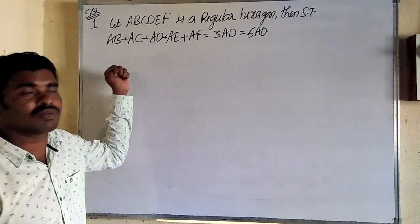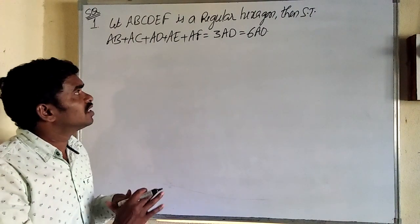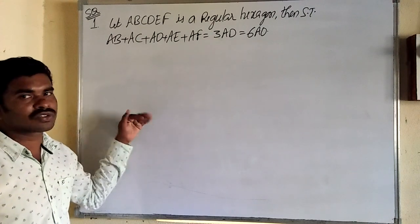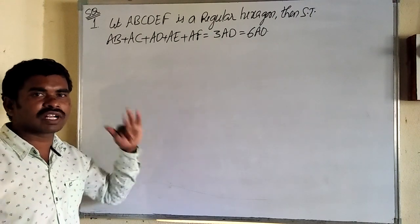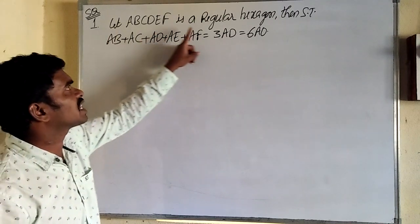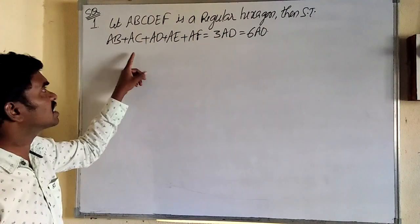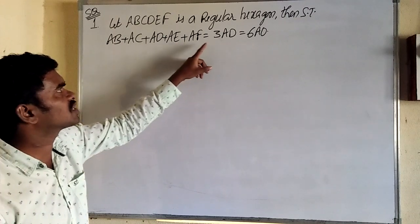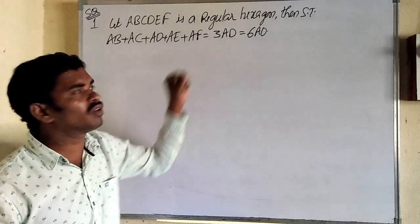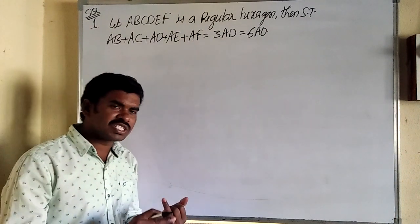Now starting 4-mark questions. Let ABCDEF be a regular hexagon. Show that AB + AC + AD + AE + AF = 3AD = 6AO. Hexagon means six sides, and regular means all six sides are equal.